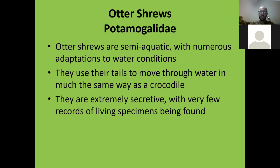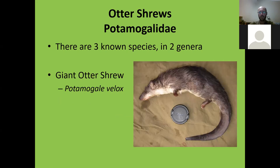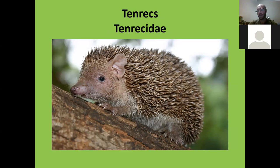There are three known species in two genera. The largest is the giant otter shrew — it has an otter-like tail, a very hairy appearance, and short reduced legs because they mostly swim. They live along river banks just like otters and have a very similar diet: fish, invertebrates, snails, freshwater clams, and small fish — whatever they can get their hands on.